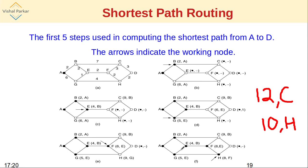D can be reached with a distance of 10 units through node H, and H was reached through F, F through E, E through B, and B through A. The shortest path is therefore A, B, E, F, H, D. Even though G was made permanent, it is not part of this final path. The shortest path between A and D is A-B-E-F-H-D with a total distance of 10 units. Thank you.